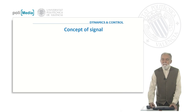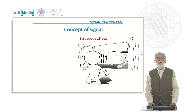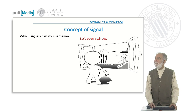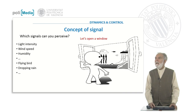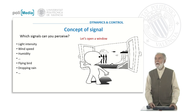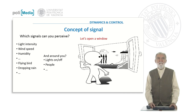So let's clarify what is the concept of a signal. If you open a window and look outside, what signals can you perceive? The intensity of the light — if it's dark or bright — the speed of the wind, the humidity. You can also see a flying bird or an aircraft, you can see the falling rain. These are signals. And also, if you look around the room where you are now, the lights can be on or off, and how many people are there? These are signals providing information about your environment or about the system you are observing.